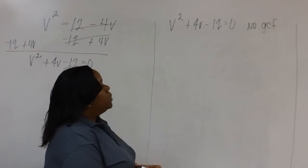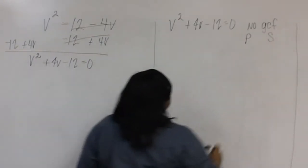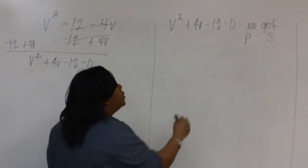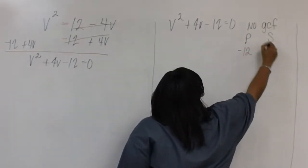Now we're ready for product sum. We need a product of 1 times negative 12, which is negative 12, and the sum of 4.